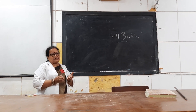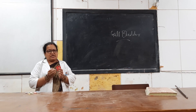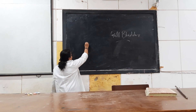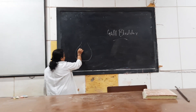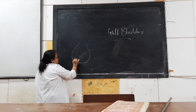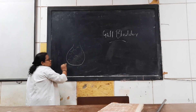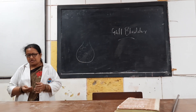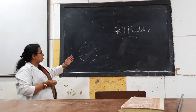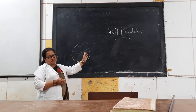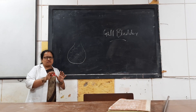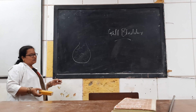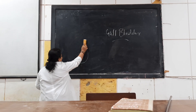Before coming to histology, I will tell you about the gross appearance. When we cut open the gallbladder, we find a honeycomb appearance within the mucosa of the gallbladder. This honeycomb appearance comes because the mucosal folds of the gallbladder anastomose with each other. Due to this anastomosis, we get to see the honeycomb appearance of the gallbladder.